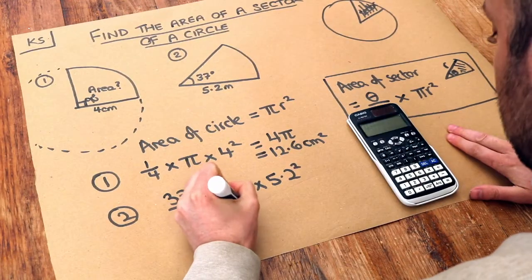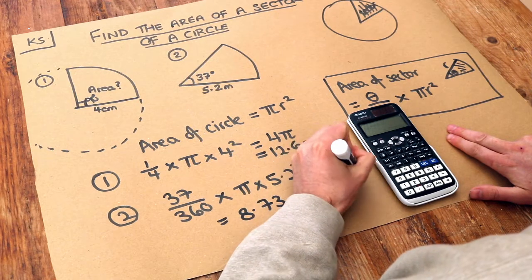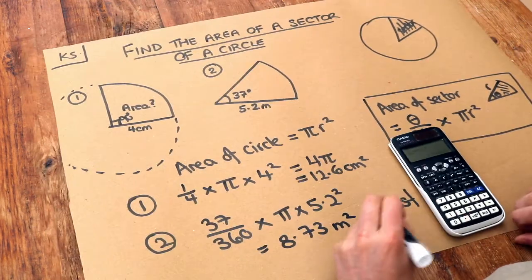And that gives us 8.73 to three significant figures. And what's the unit? Well, this is metres, so the area is going to be metres squared. And that is it.